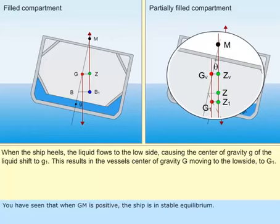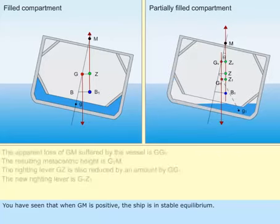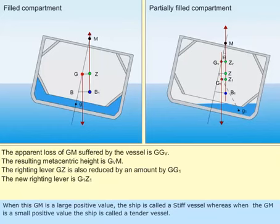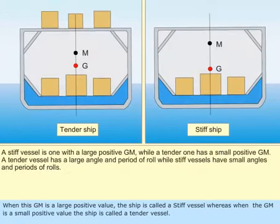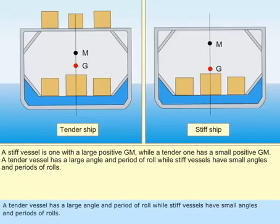You have seen that when GM is positive, the ship is in stable equilibrium. When this GM is a large positive value, the ship is called a stiff vessel. Whereas, when the GM is a small positive value, the ship is called a tender vessel. A tender vessel has a large angle and period of roll, while stiff vessels have small angles and periods of rolls.